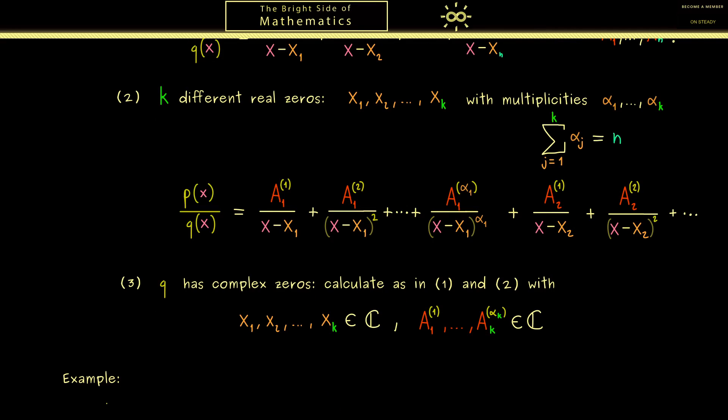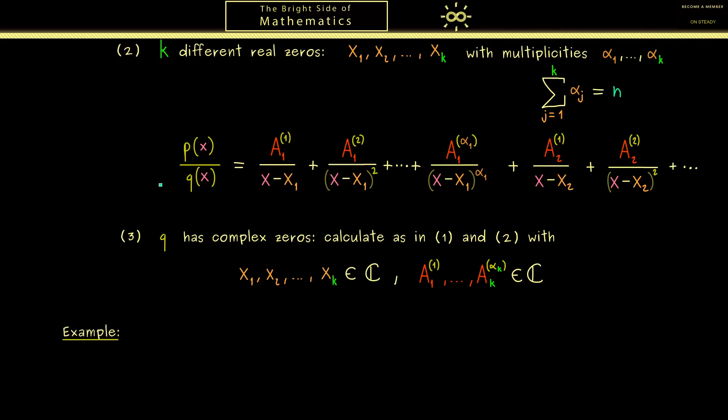In this video now I want to concentrate on a real example. More precisely we will tackle the second case. Here our rational function f is given by p equals 1 and q equals x² times (x-1).